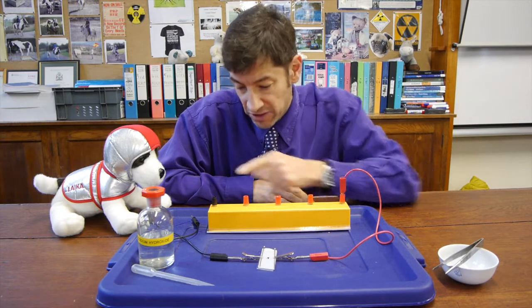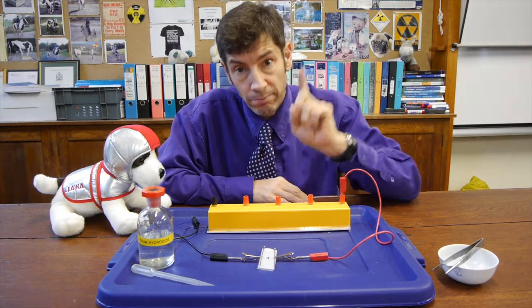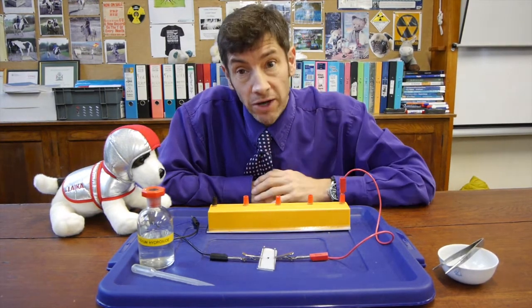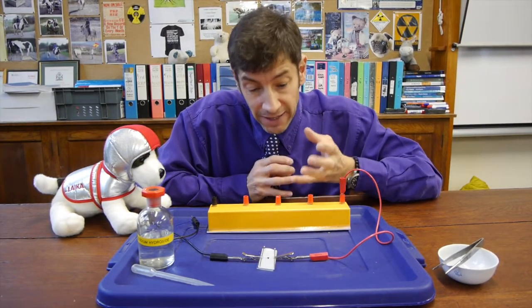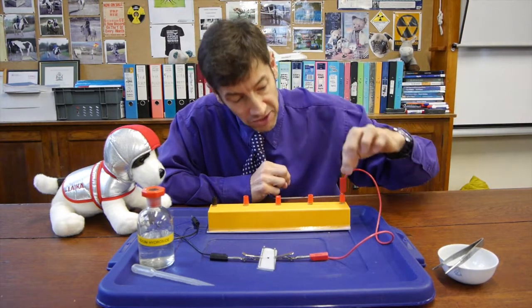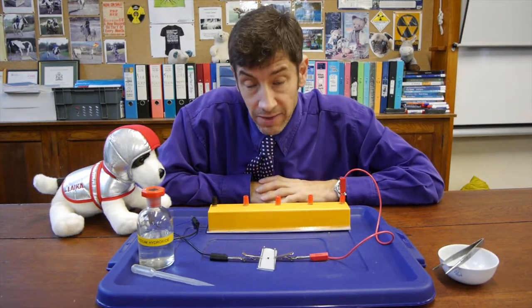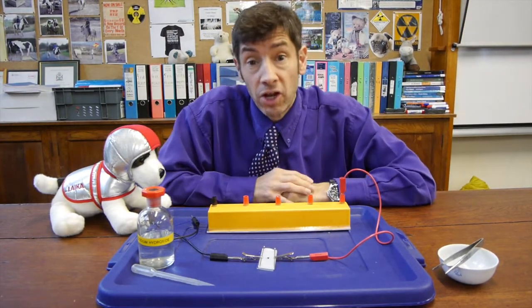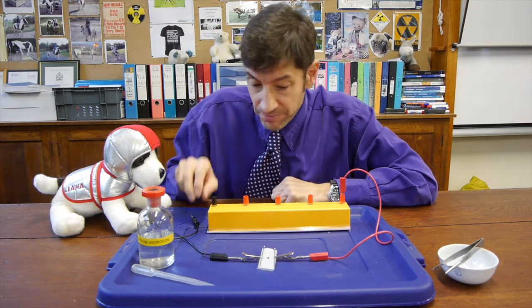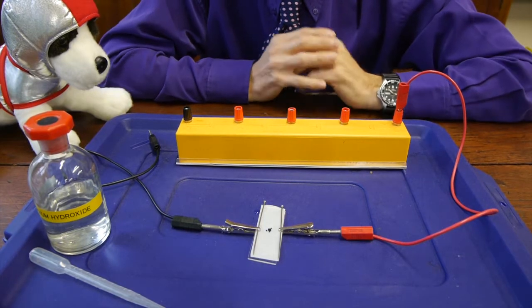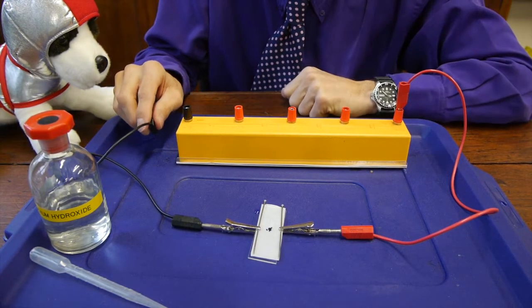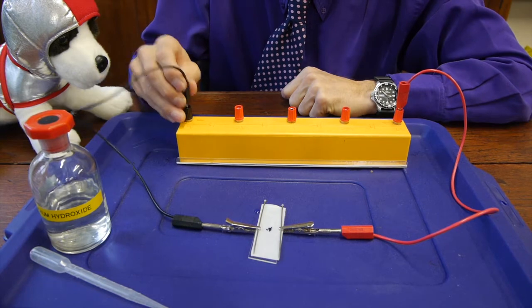So if you think about it, when we switch on the circuit, the positive potassium ions are going to get attracted to the minus and the negative manganate ions are going to be attracted to the plus. Now remember how quickly the light lit up. So let's see what happens. So you're ready. Let's see how quickly the electricity flows in this little cell. Three, two, one, go.